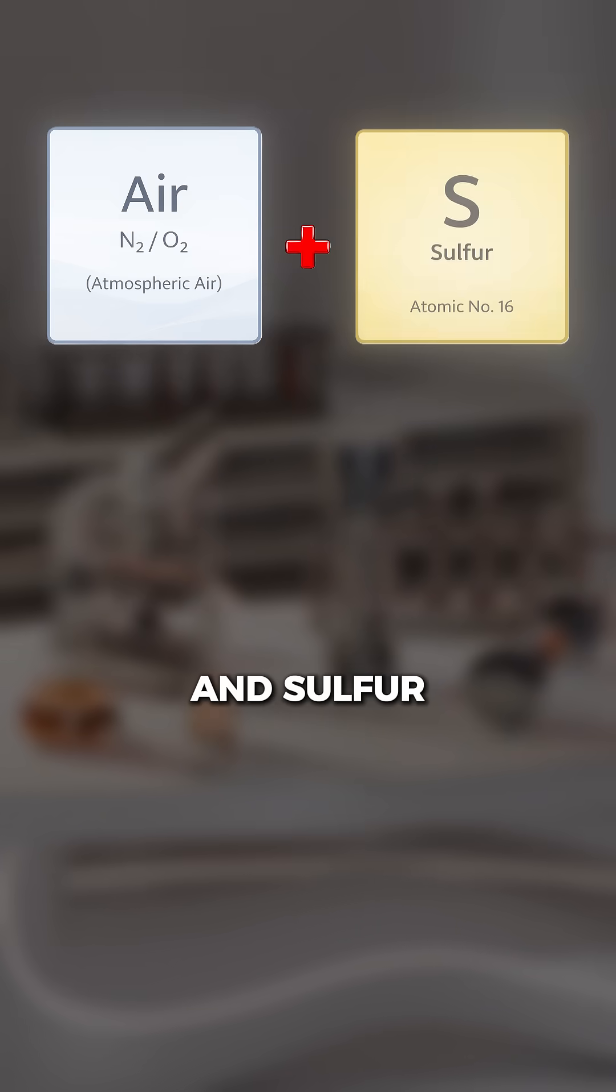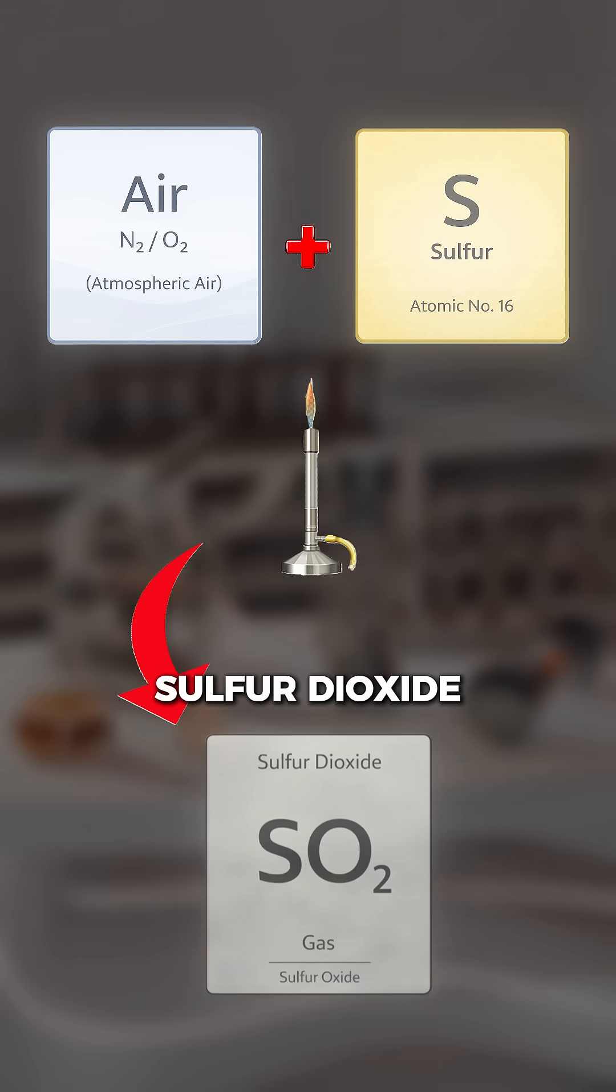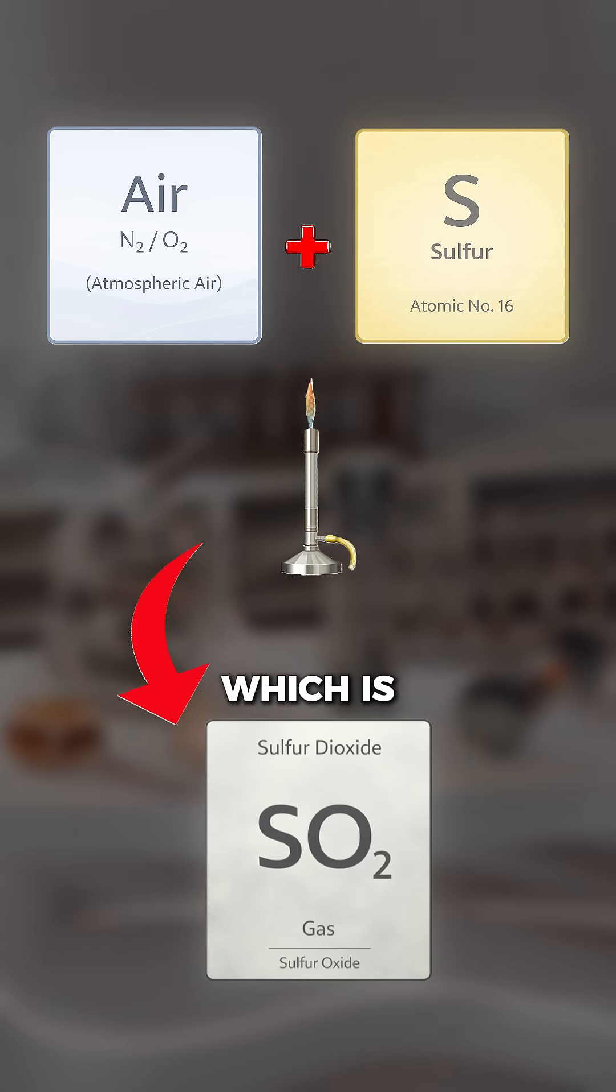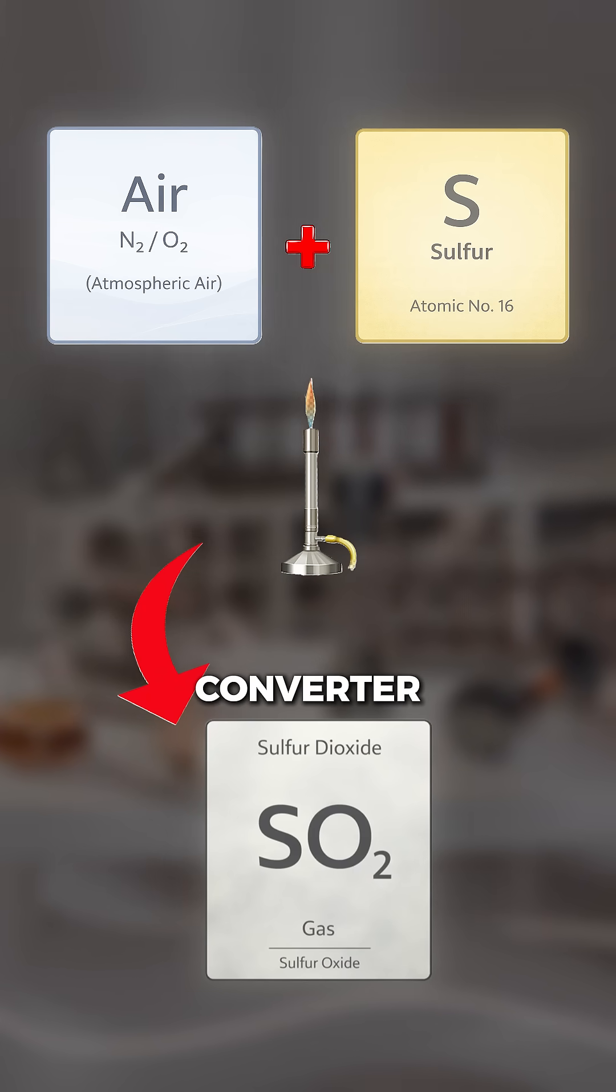In our modern contact process, we use air and sulfur in a burner to create sulfur dioxide and oxygen, which is converted into sulfur trioxide within a catalytic converter.